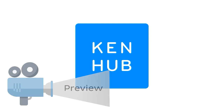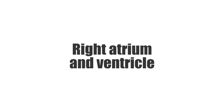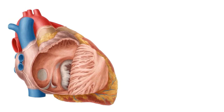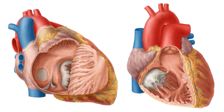Hello everyone, this is Joao from KenHub, and welcome to another anatomy tutorial where this time we're going to be covering the right atrium and ventricle. To do so, we're going to be using two images: this one on the screen showing the right side of the heart with the right atrium cut open, exposing its different structures, and another image showing the interior view of the heart with the right ventricle cut open to expose the structures we'll be highlighting and discussing throughout this tutorial.